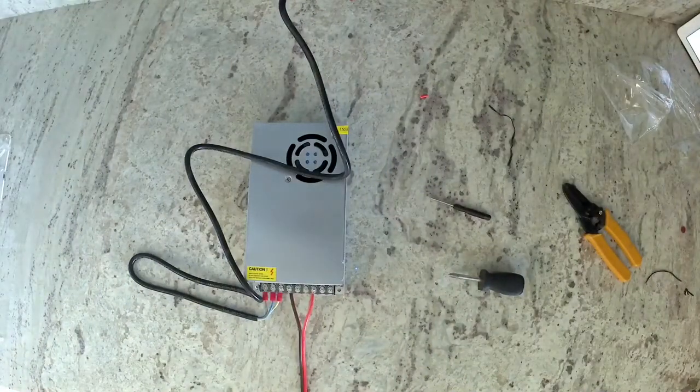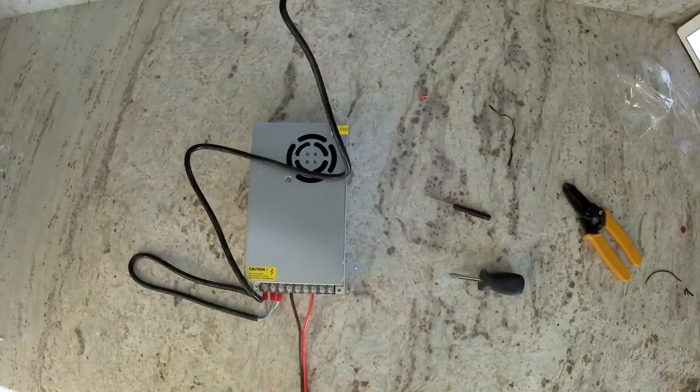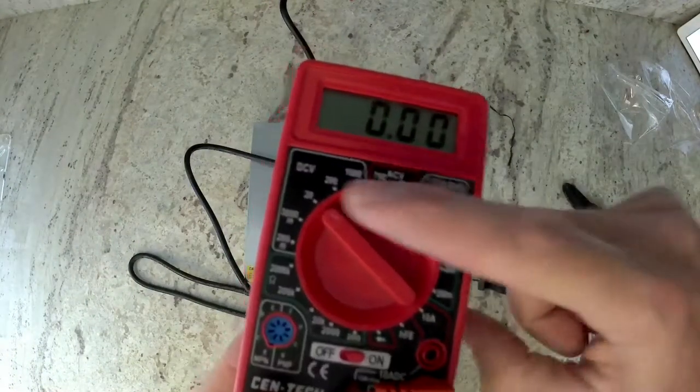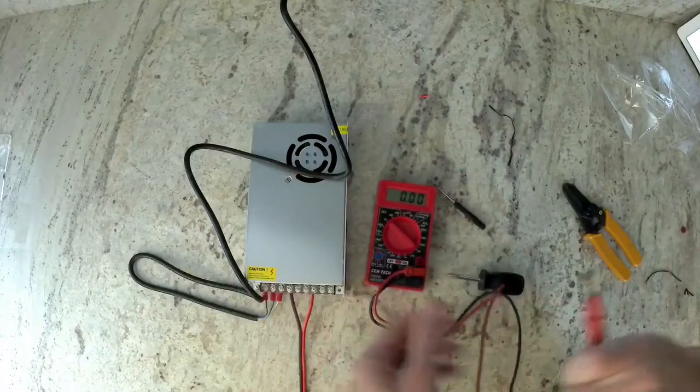If you have a multimeter, you can set it to DC volts. Make sure you set it to something over 20. Mine is currently set to DC volts in 20, so I can read 12 volts.